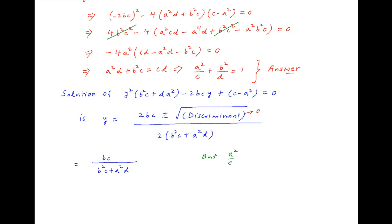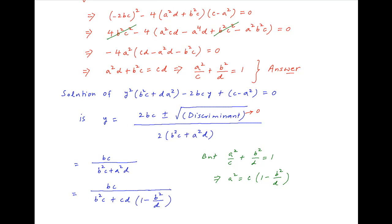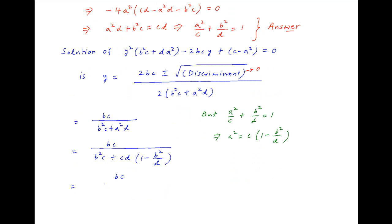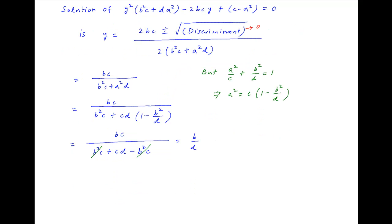Now, we have obtained earlier that a squared upon c plus b squared upon d is equal to 1, and this implies that a squared is equal to c times, in brackets, 1 minus b squared upon d. Substituting this value of a squared in the expression for y, we get bc upon b squared c plus cd times, in brackets, 1 minus b squared upon d, which equals bc upon b squared c plus cd minus b squared c. The b squared c terms cancel in the denominator and the value of y simplifies to b upon d.